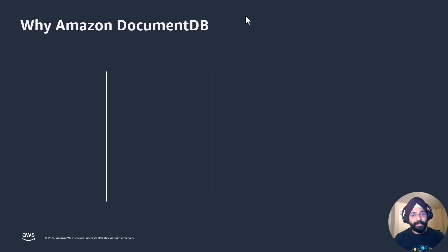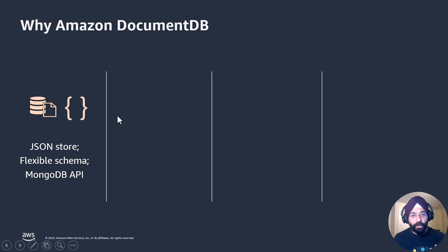That was the semantic search demo. Before we sign off, I want to give you four reasons why you should choose DocumentDB as your vector store for AI/ML workloads. Number one: a lot of AI/ML applications involve unstructured data. DocumentDB, being a document database, is very powerful in those scenarios. It has a flexible schema, so you don't need to plan ahead — you can change your database schema on the go because it is schema-less.